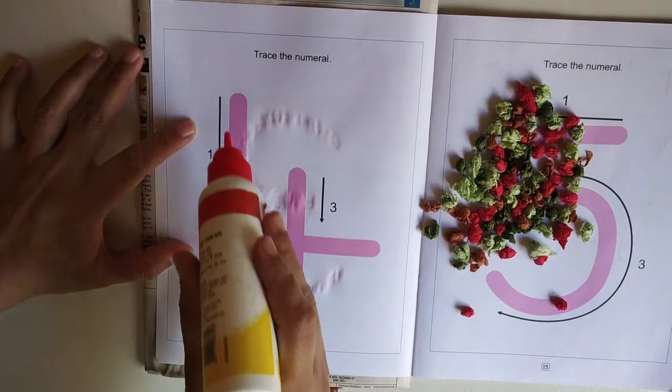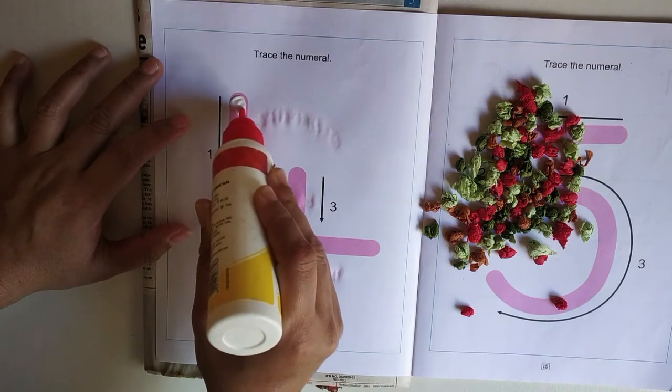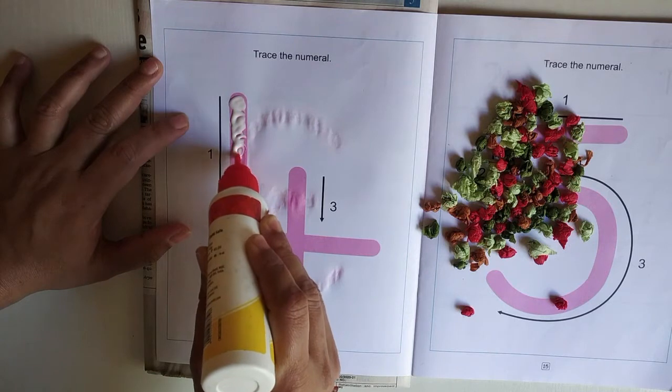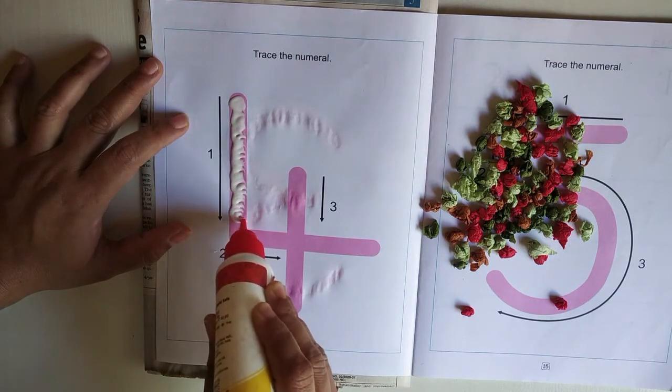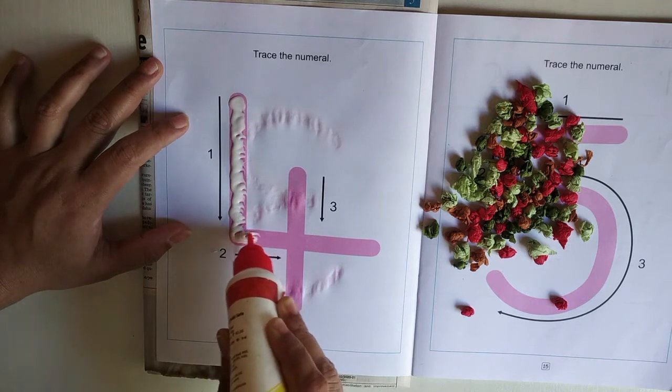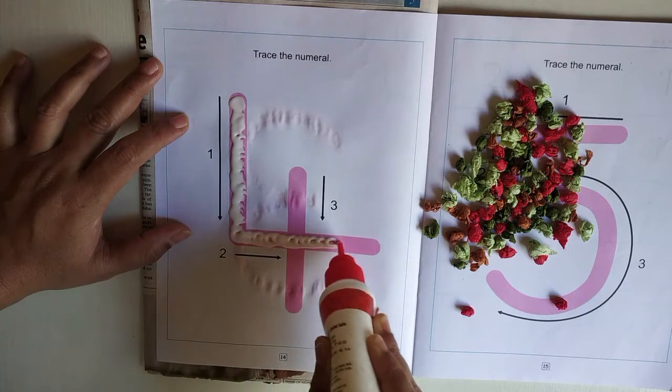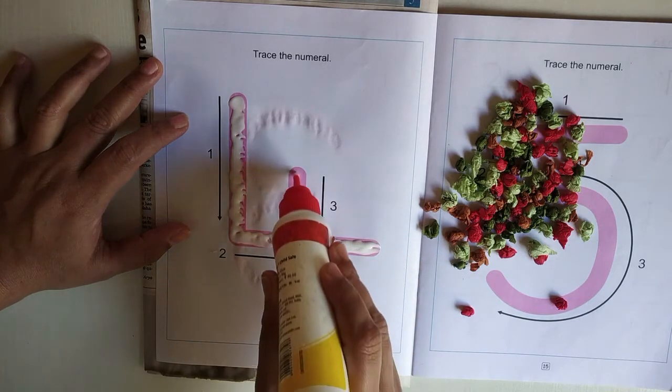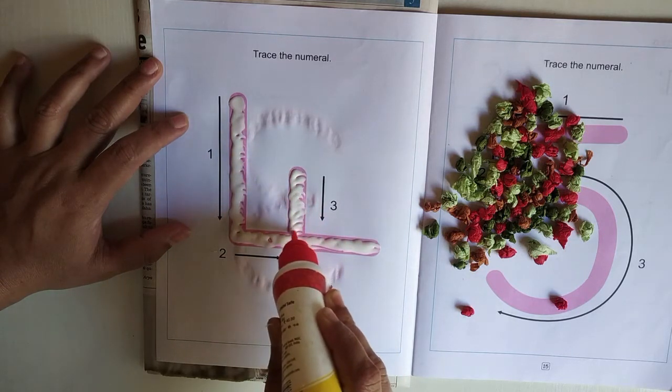Now what you're going to do is open your maths pencil time and open the page number where we have number 4. Apply favicol very neatly. It should not come out from the pink area. Wherever there is that pink number is written, there only you should apply.